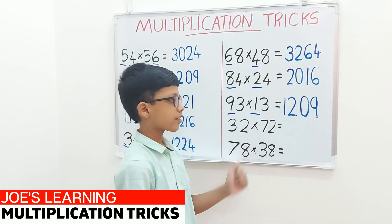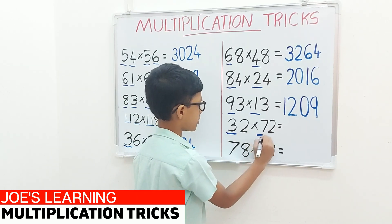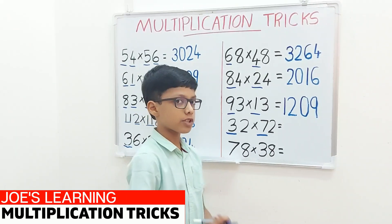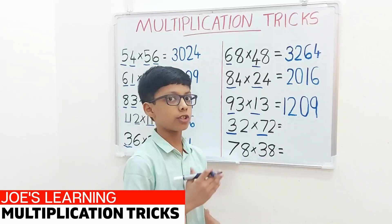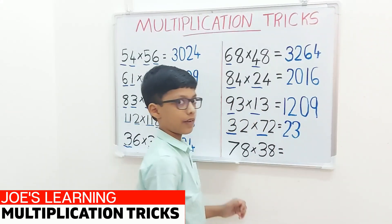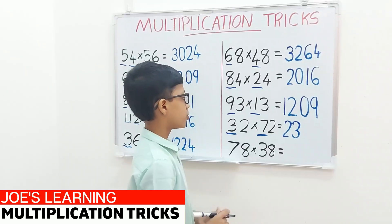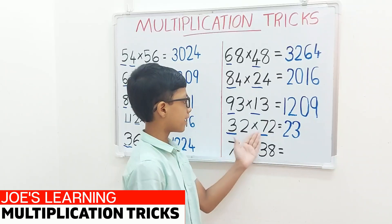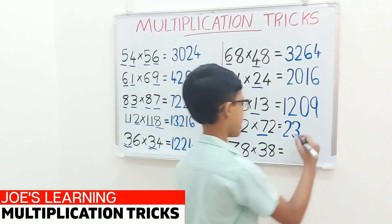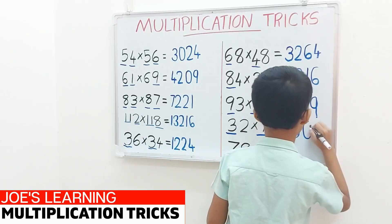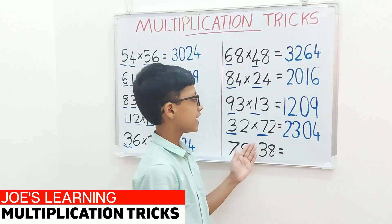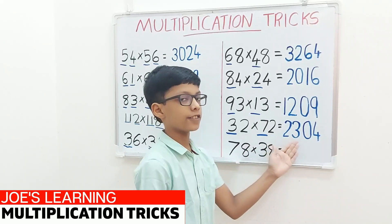Now let's move on to the example 32 multiplied by 72. First we have to look at the digits in the tens place and multiply them together. So 3 multiplied by 7 equals 21. Now we should add the digit in the ones place to it. So 21 plus 2 equals 23. Now to find the next two digits, multiply the digits in the ones place. So 2 multiplied by 2 equals 4, but we should have a two digit number, so add 0 and write it as 04. So 32 multiplied by 72 equals 2304.